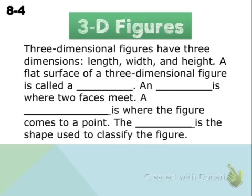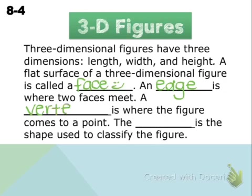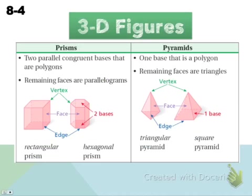A flat surface of a 3D figure is going to be called one of its faces. An edge is going to be where two of these faces meet. A vertex is going to be where the figure comes to a point. And finally, the base is what we're going to use to classify the figure. A rectangular pyramid would have a rectangle bottom, and a triangular pyramid would have a triangle base.